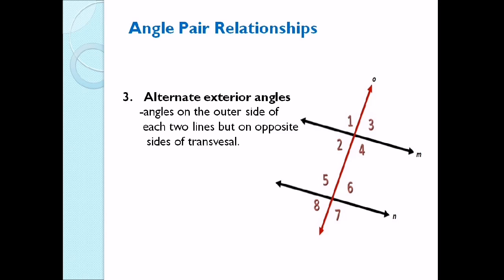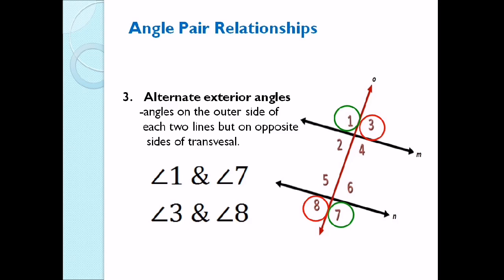Number 3: We have the alternate exterior angles. These are the opposite of alternate interior angles. This time, they are on the outer side of the two lines, but on opposite sides of the transversal. The alternate exterior angles are: angle 1 and angle 7, and angle 3 and angle 8.